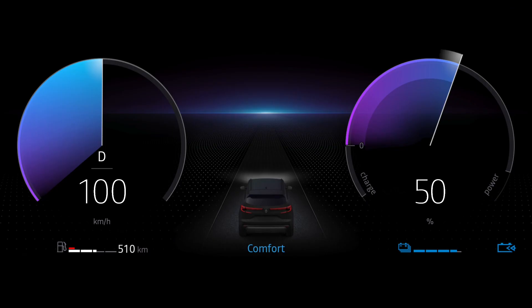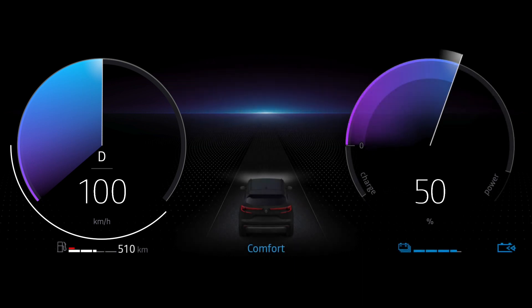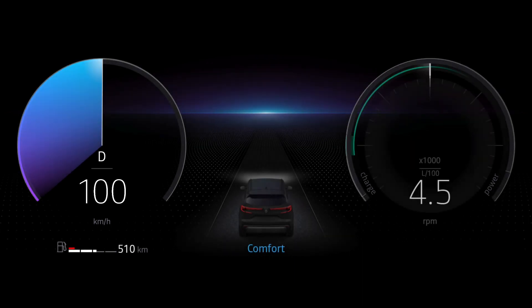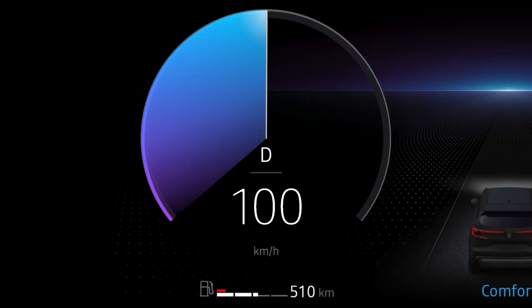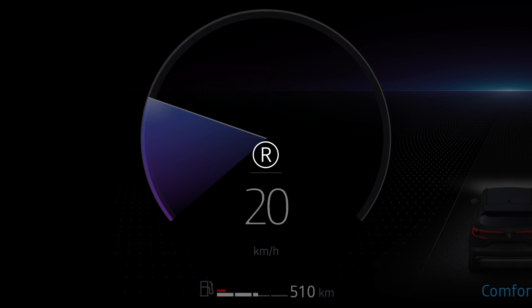The classic design consists mainly of a speedometer and a power meter for hybrid vehicles, or a rev counter for combustion engine vehicles. The current gear is displayed in the center of the speedometer.